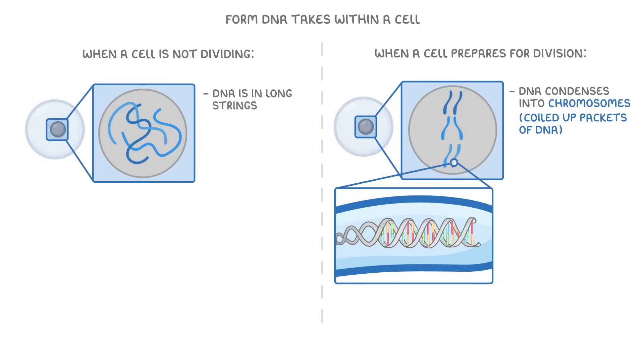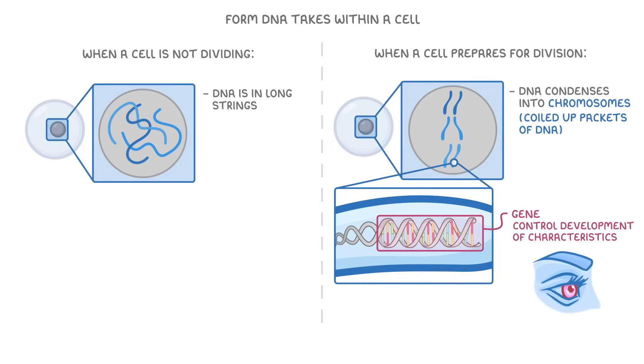The DNA of each chromosome contains a large number of genes, and these control the development of different characteristics, such as eye colour.